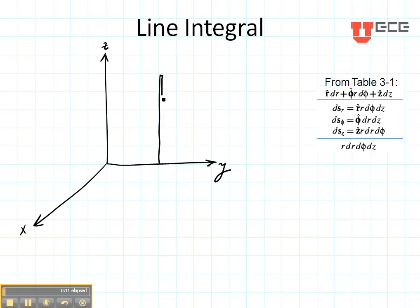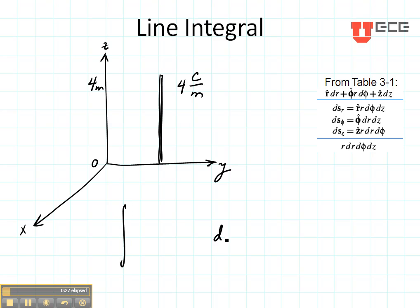Let's consider the exact same piece of wire that has four coulombs per meter charge on it, and I want to know its total charge over a length from zero to four meters. The way I did that before is with a line integral. Since the charge density is scalar, my DL is also going to be a scalar value.